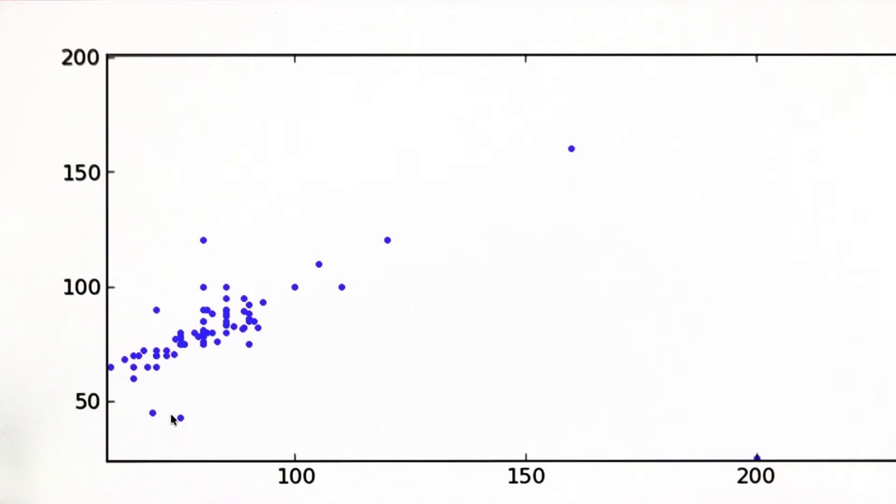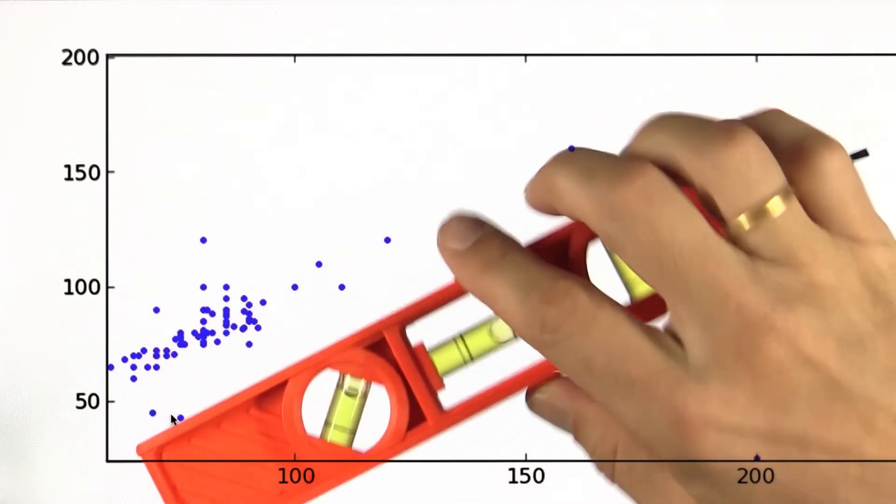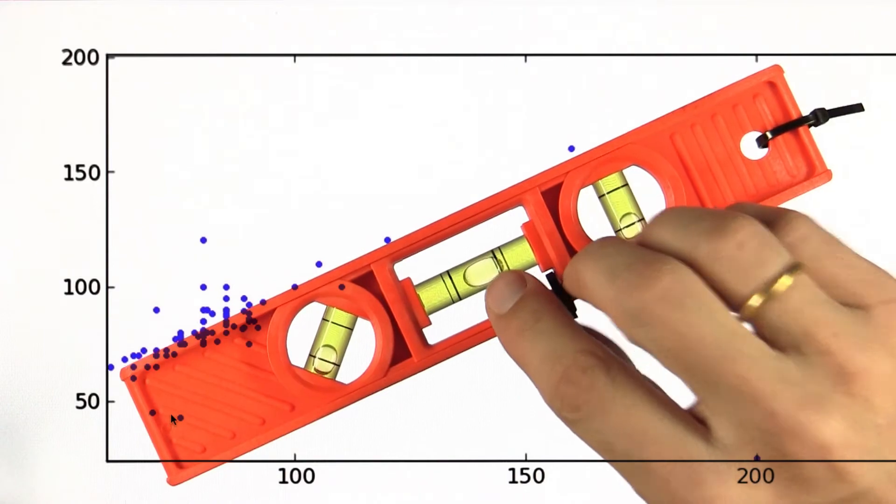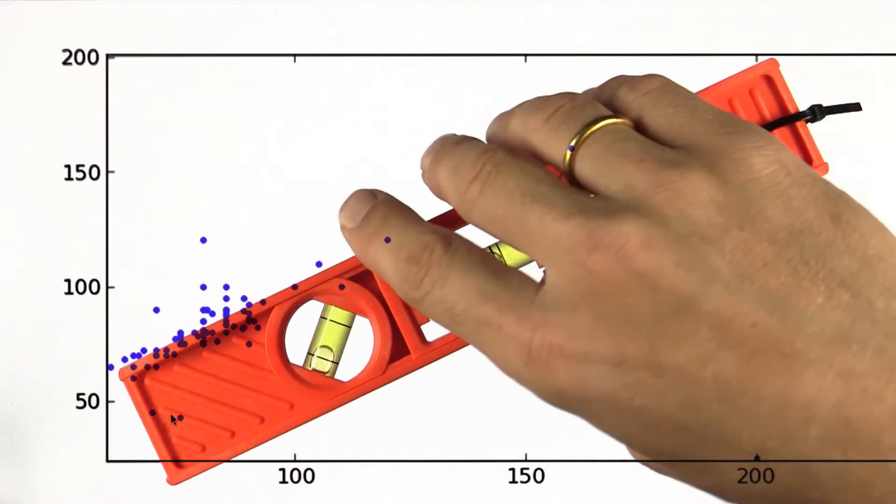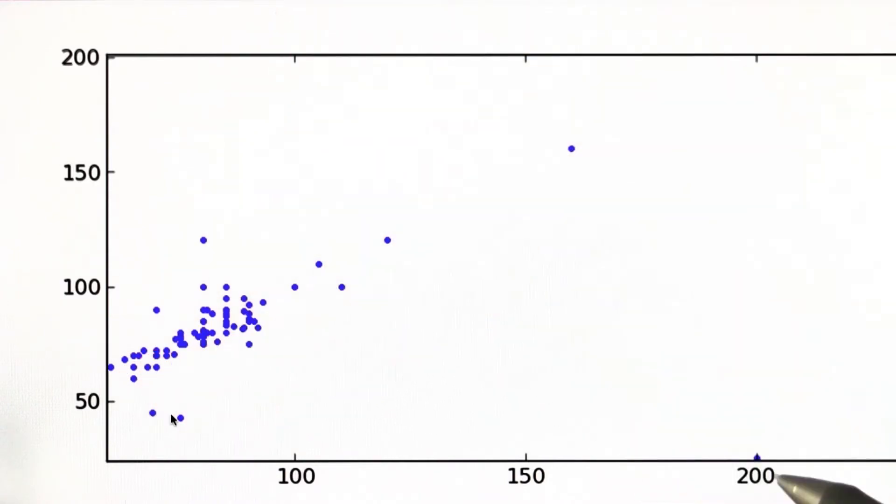And then I can run a scatter plot of today's weight versus last year's weight. And when I do this, I get an interesting graph. It is approximately linear, but there's some very funny outliers.